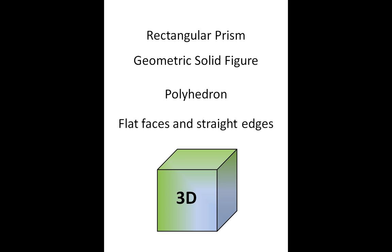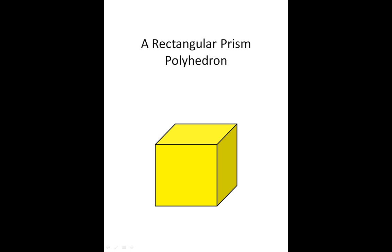A polyhedron has flat faces and straight edges. The polyhedron that we'll be working with today is called a hexahedron and that means it has six faces or six sides and that comes from the classic Greek word hex, the root hex meaning six and hedron meaning faces.